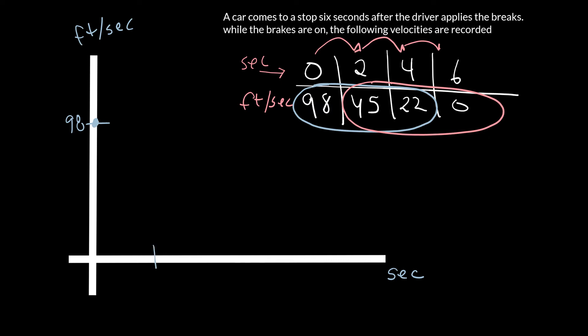At two seconds, I'm at 45. So we'll put a point about right there. At four seconds, I'm at 22. So put a point right there. And then at six seconds, I'm at zero feet per second.